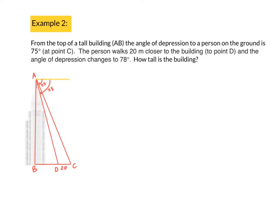Let's look at an example with angles of depression. It says from the top of a tall building AB, so there's my tall building, the angle of depression to a person on the ground is 75 degrees. So remember the angle of depression runs from the horizontal down. So that will be the angle of depression there. The person walks 20 meters closer to the building. There I can see they've walked 20 meters closer to the building to point D, and the angle of depression changes to 78 degrees. The question is, how tall is the building?